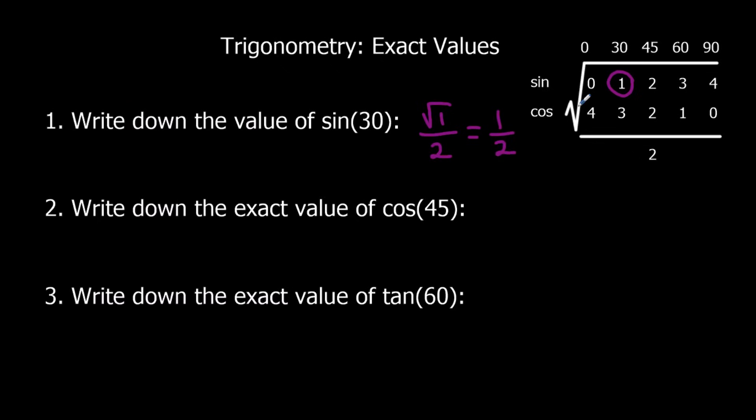Cos 45, that's here. That's root 2 over 2. That's the simplest form, so we don't have to do anything more to that.